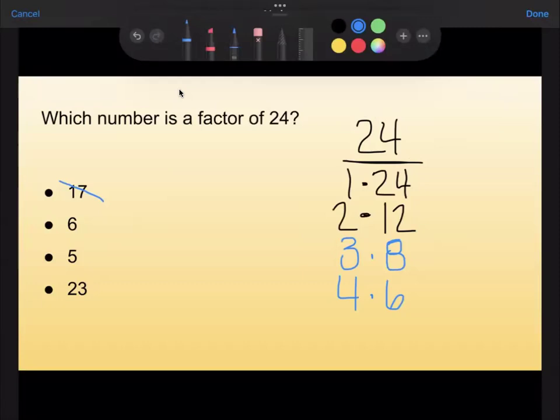I don't see a 17. I do see a 6. I don't see a 5, and I don't see a 23. So from this list, the only factor of 24 would be the number 6.